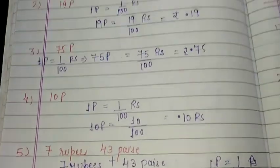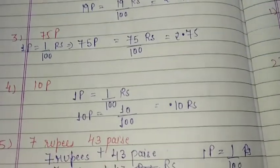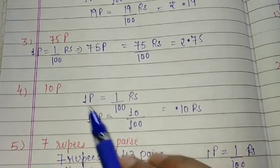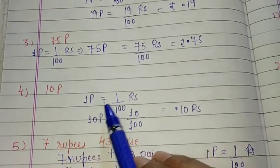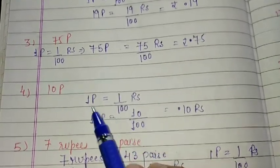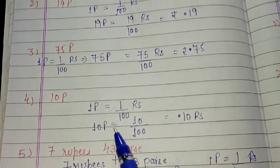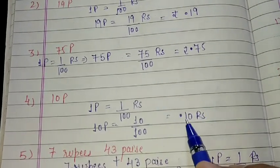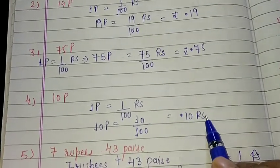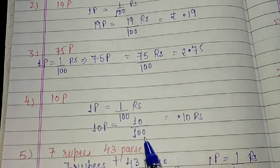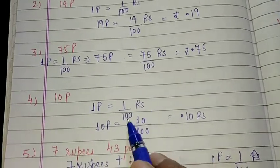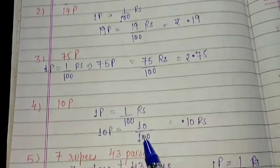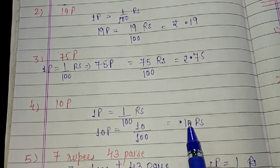10 paisa — again, same: because we have to convert this into rupees, 1 paisa is equal to 1 over 100 rupees, so 10 paisa is equal to 10 over 100 rupees, that is 0.10 rupees. Downside 2 zeros are there, so upside we will put point before 2 numbers — that is 0.10.